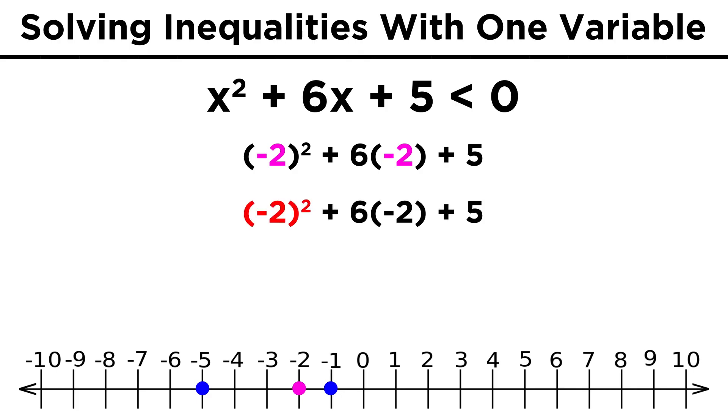In between, we could try negative two. Negative two squared is four, plus negative twelve is negative eight, plus five is negative three. Negative three is less than zero, so this section is a solution to the inequality.